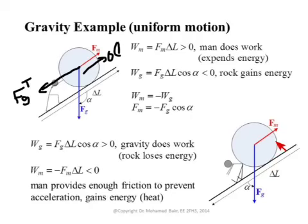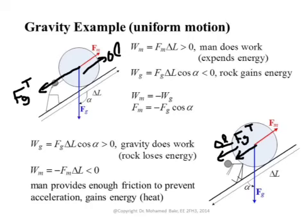Now consider the other situation where the rock is falling — moving downward — and the man is trying to stop it. In this case, gravity does positive work because its component Fg tangential is in the same direction as the movement. The man does negative work because he pushes upward but cannot stop the fall. Because he puts in negative work there is friction, creating heat, and the rock loses energy as it descends from a higher to a lower elevation. This example helps define work done by or against an electric field.